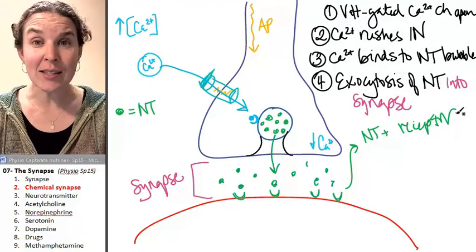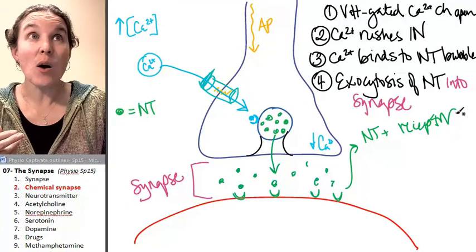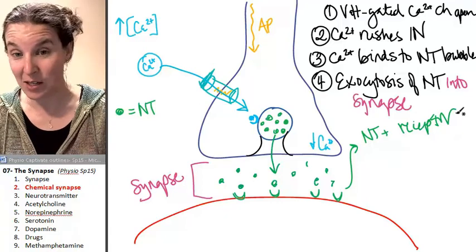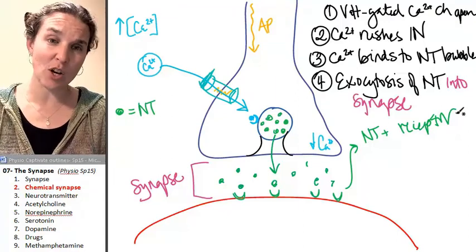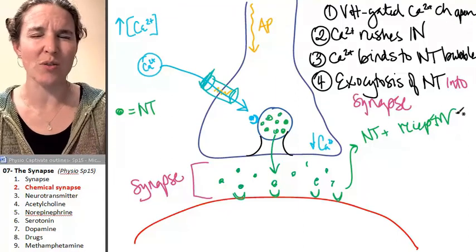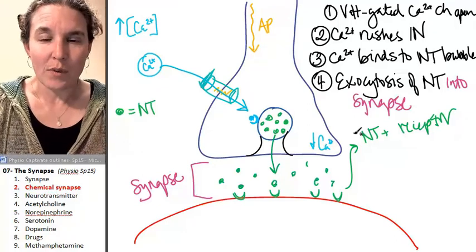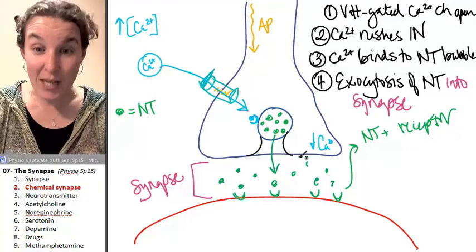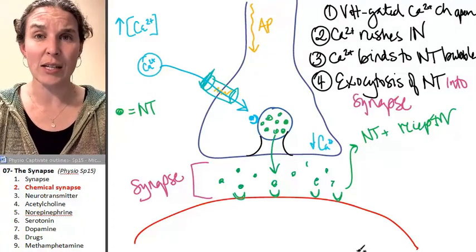If you open potassium channels, that's going to prevent an action potential. That's going to make the membrane potential more negative because potassium is going to rush out. Potassium is going to go where it's not supposed to go. Potassium rushes out and prevents an action potential in the effector.